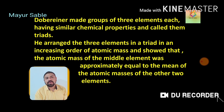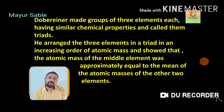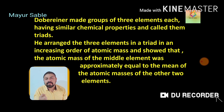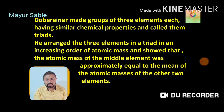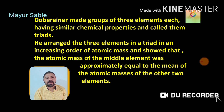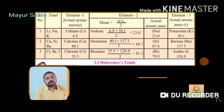He showed that the atomic mass of the middle element was approximately equal to the mean of the atomic masses of the other two elements. That is: atomic mass of the first element plus atomic mass of the third element, divided by two, equals approximately the atomic mass of the middle element. Dobereiner gave several such groups of elements, called triads. Let us see some examples.